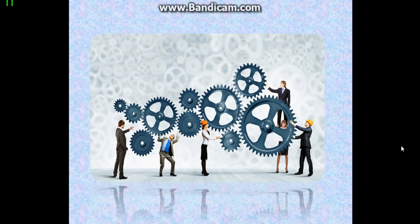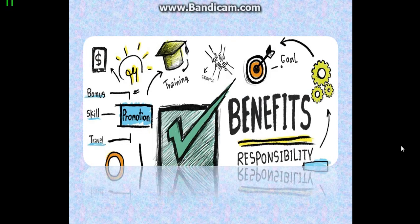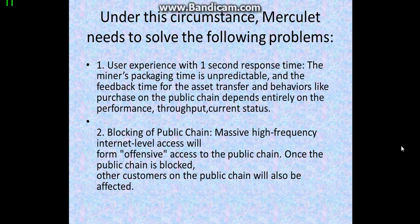The challenges include the intermediate status, the behavior of massive amounts of mobile users, high-frequency small-sum transactions, user experience with one-second response time, and unpredictable transaction costs such as gas fees. Merculet needs to solve these problems — starting with user experience: the transaction cannot be completed in real time and the user experience will be inferior as an internet product.